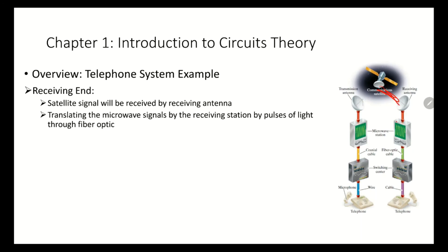Then the receiving station would translate the micro signals using pulses of light through the fiber optic. Then after passing the second switching center, the combined signals are separated and each is routed to the appropriate telephone. Where an earphone acts as a speaker to convert the received electrical signal back into sound waves.